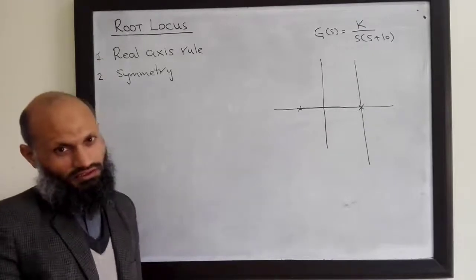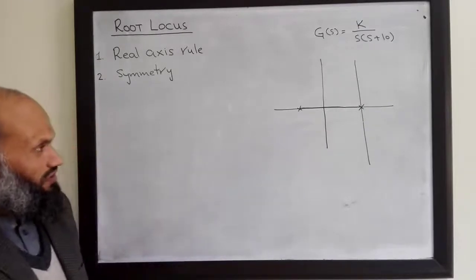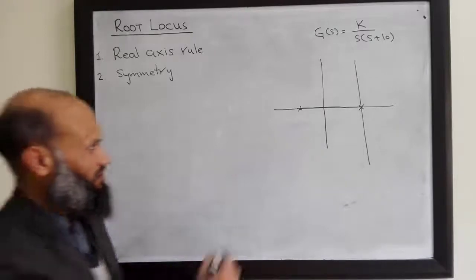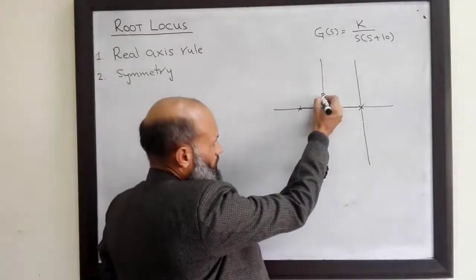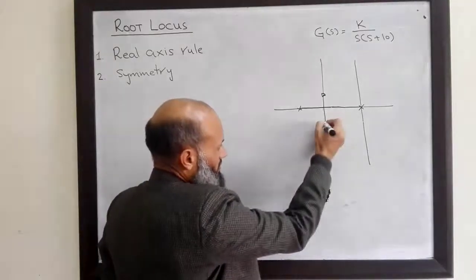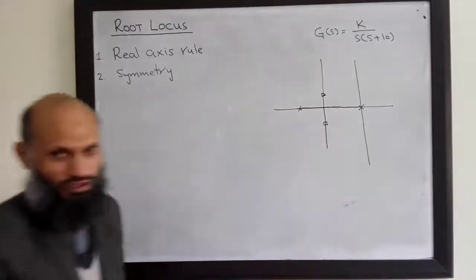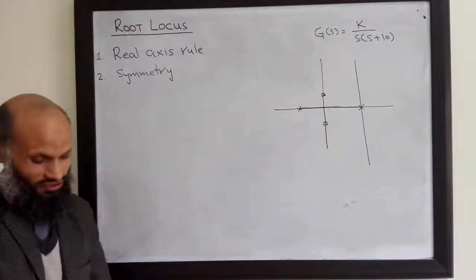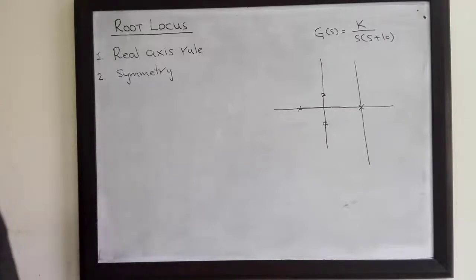Because the poles of a real system, if they are complex, always exist in conjugate pairs. If there is a pole at one location, there must exist a conjugate pole. Therefore, the root locus is symmetrical about the horizontal axis.